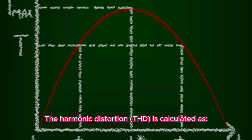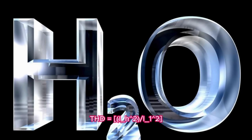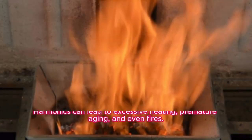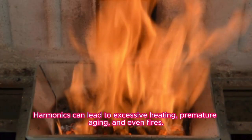The harmonic distortion is calculated as THD = √[Σ(I_h^2)] / I_1^2. Harmonics can lead to excessive heating, premature aging, and even fires.